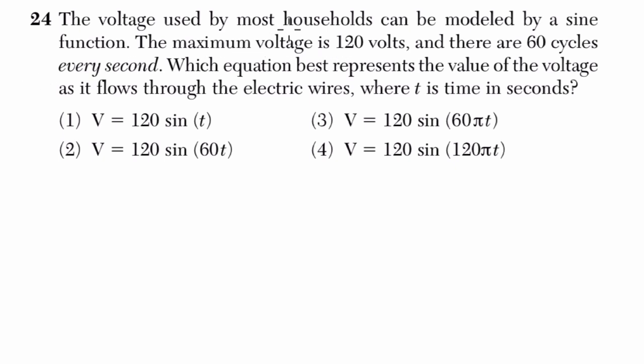All right, so we're told that the voltage used by most households can be modeled by a sine function where the maximum voltage is 120 volts, and there are 60 cycles every second. Which equation best represents the value of the voltage as it flows through the electric wires where t is time in seconds?